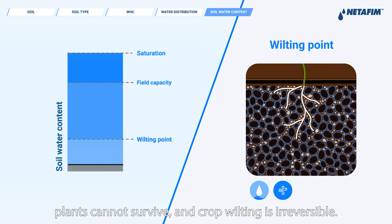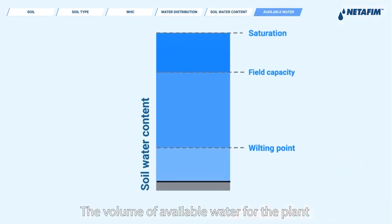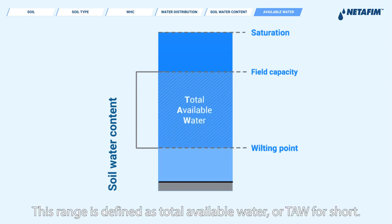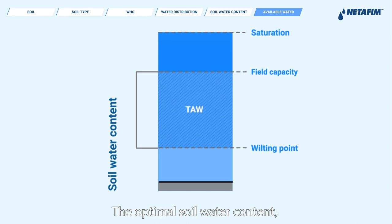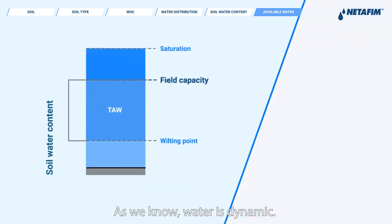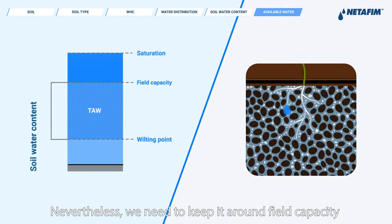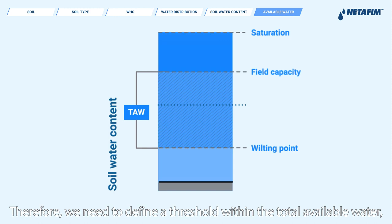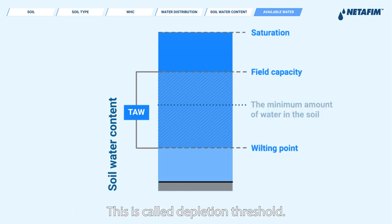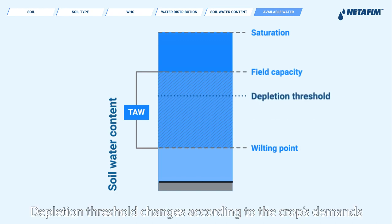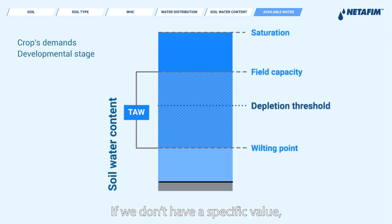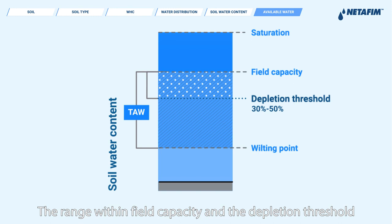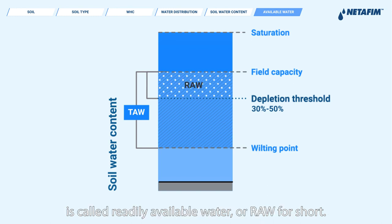Below wilting point, plants cannot survive, and crop wilting is irreversible. The volume of available water for the plant is between field capacity and wilting point. This range is defined as total available water, or TAW for short. The optimal soil water content to keep plants healthy and productive is field capacity. Since water is dynamic, we need to keep it around field capacity to avoid the wilting point. Therefore, we need to define a threshold within the total available water indicating the minimum amount of water in the soil — this is called the depletion threshold. Depletion threshold changes according to the crop's demands and its developmental stage. If we don't have a specific value, allowable depletion usually ranges from 30 to 50 percent. The range between field capacity and the depletion threshold is called readily available water, or RAW for short.